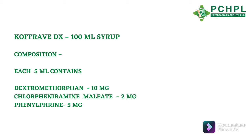The third product is Cough Rave DX. It is again a 100 ml syrup. Its composition is — each 5 ml contains dextromethorphan 10 mg, chlorpheniramine maleate 2 mg, and phenylephrine 5 mg. This combination we mostly prescribe when allergic symptoms come — cough and cold with allergic symptoms like runny nose and watery eyes.